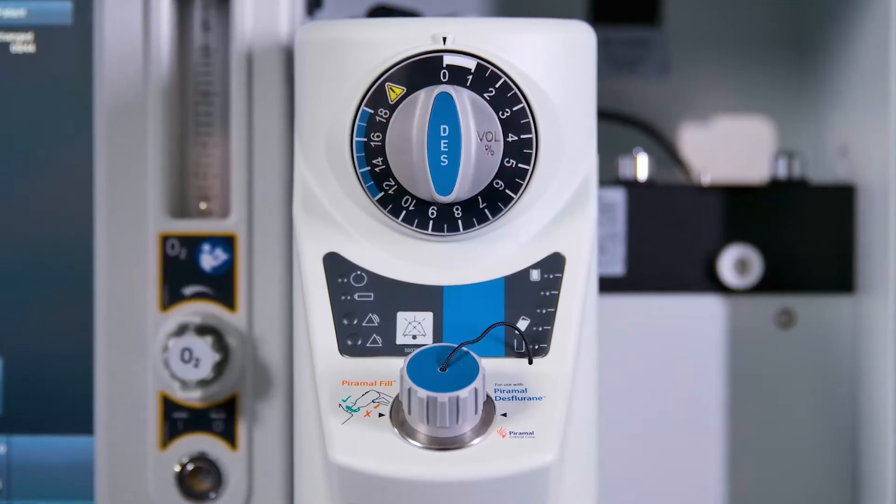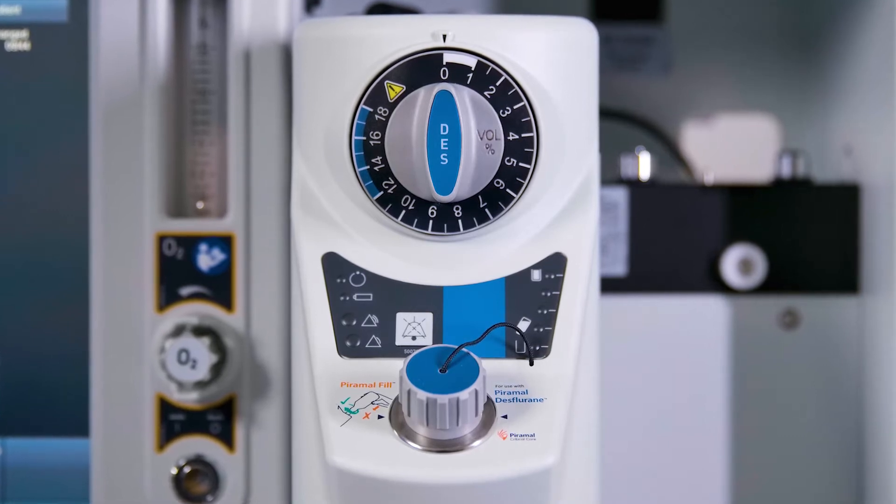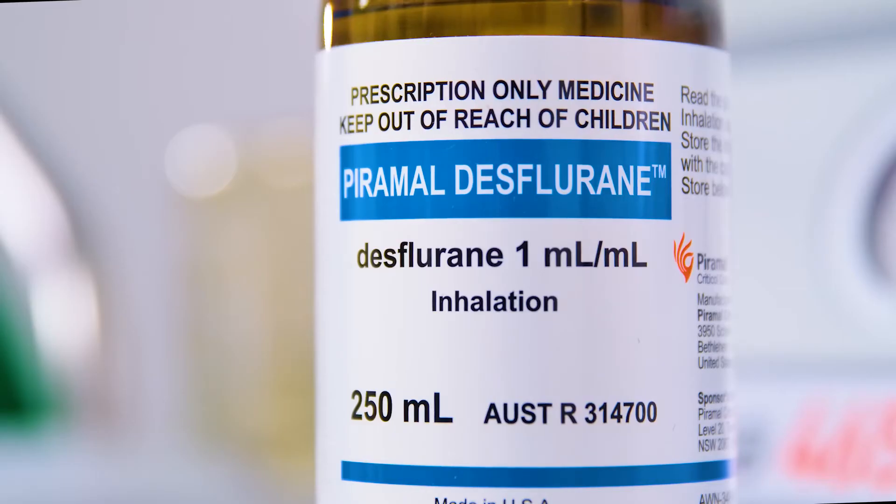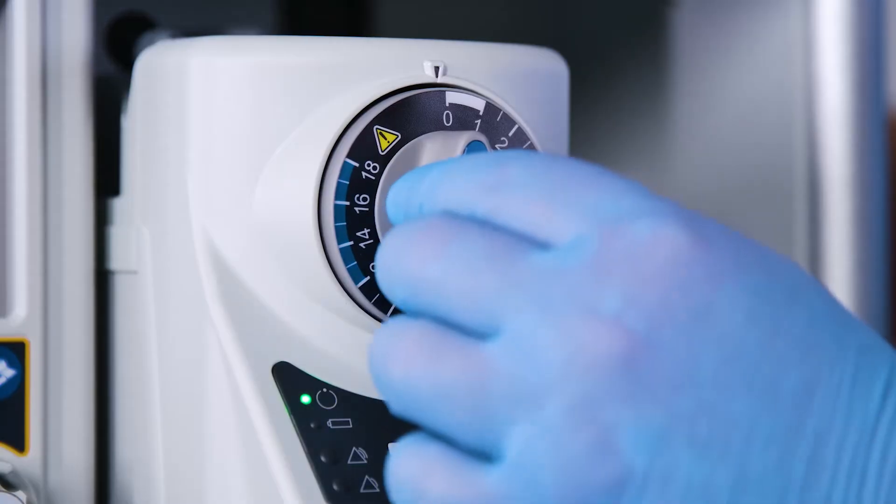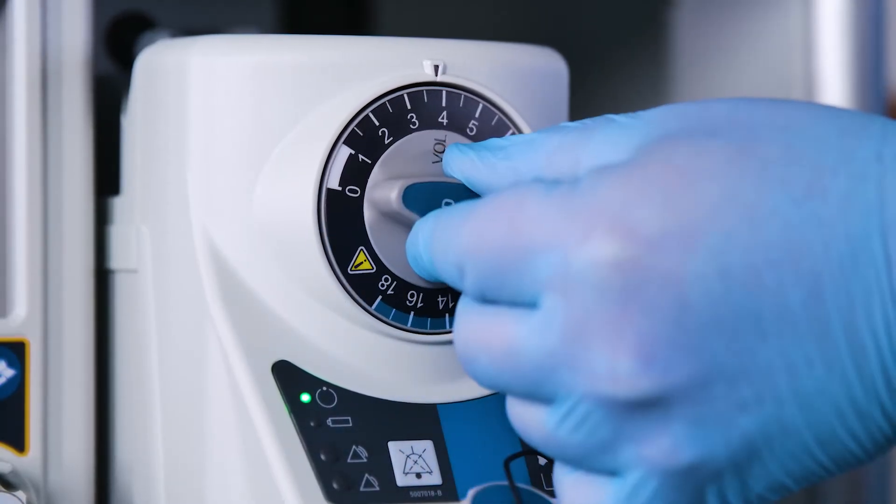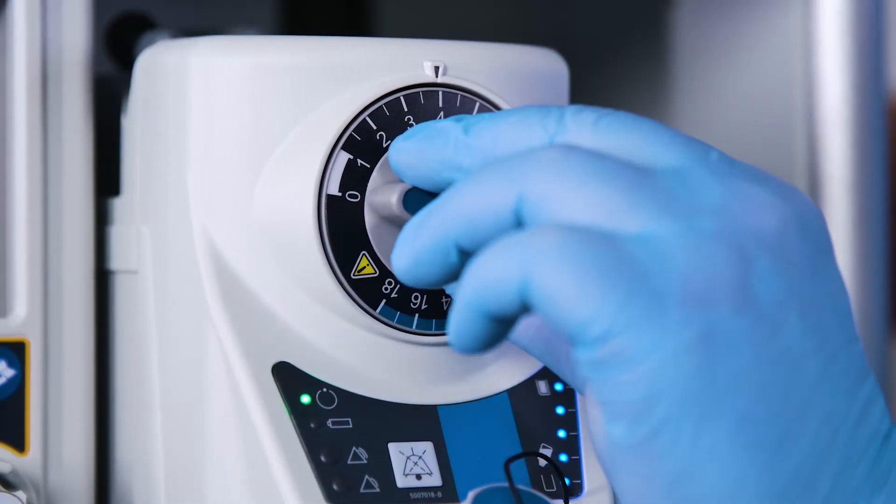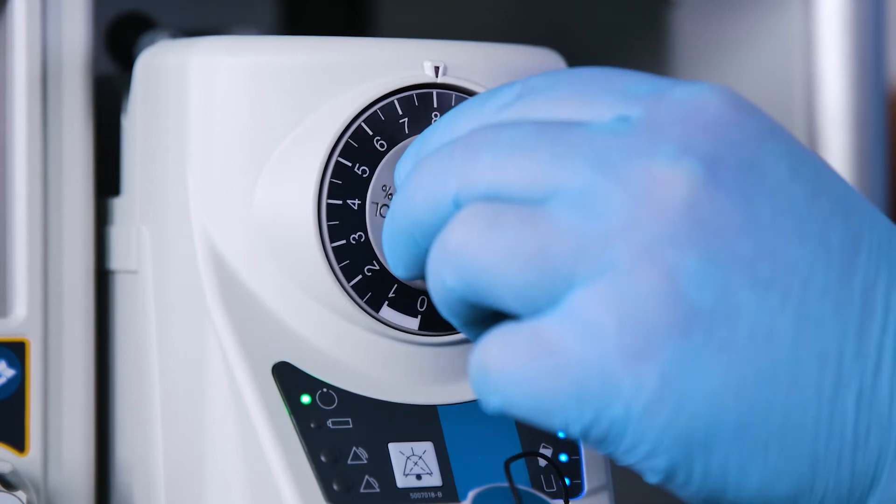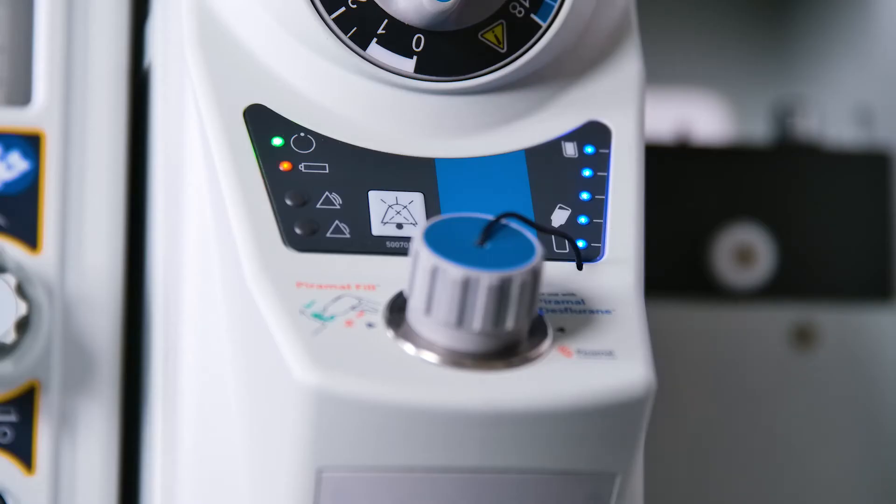The Pennon Sigma EVA anesthetic vaporizer is designed for use with desflurane anesthetic agent. The Sigma EVA has a single forward-facing rotary control dial to regulate the vapor concentration delivered. Alarms and status indicators are located on the front of the vaporizer.